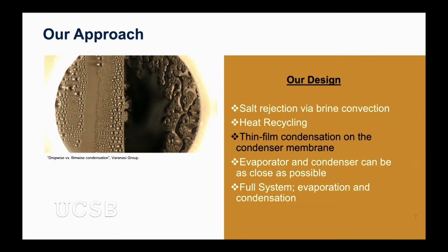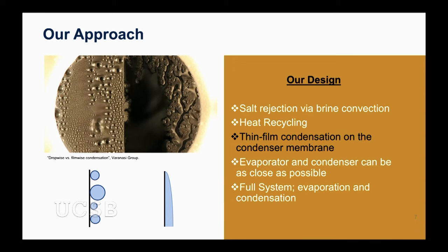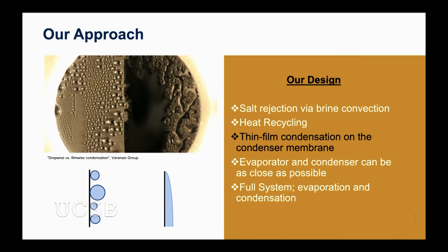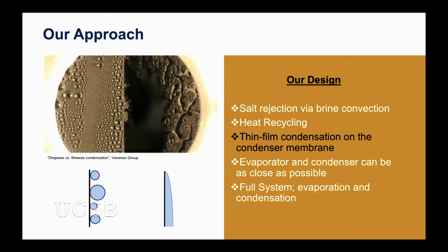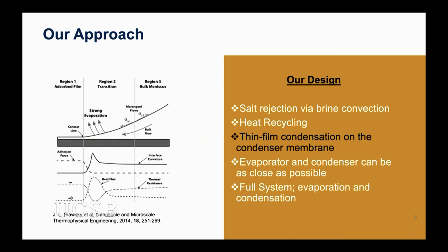Water can condense in two ways: dropwise condensation, where individual droplets form, or filmwise condensation, where droplets accumulate into a film of water that sheds due to gravity. These are the typical modes people think about for condensation. Can we do better at condensing water vapors? When you change a phase from vapor to liquid, how can you maximize heat transfer? That's what engineers think about.